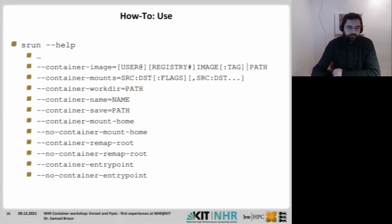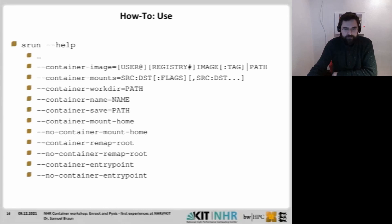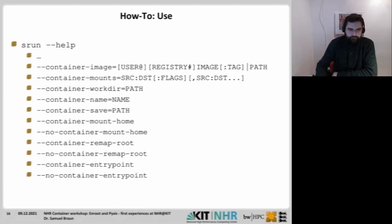Here are the command line arguments added to srun. You can define a container image, which might be a Docker registry or a local squash file. If you give the container a name — for instance, myalpine — then a persistent enroot container is created, named pyxis_[yourname]. When you restart the Slurm job with the same container name and image, it doesn't download the image again, but uses the already-prepared container in your home directory. You can also define whether to run as root, whether to mount the home directory, and so on.